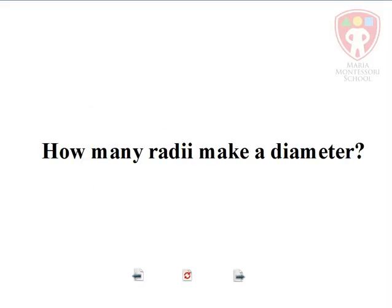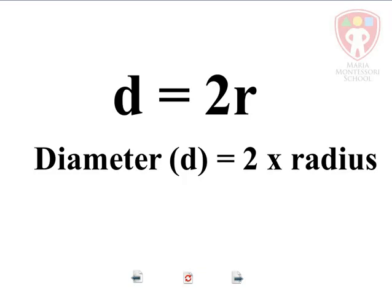How many radii make a diameter? Well, we know this. Diameter equals 2r, meaning that the diameter, the length of the diameter, is the same as two times the length of the radius. Meaning that if